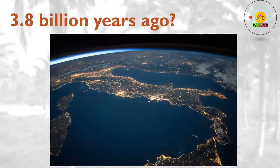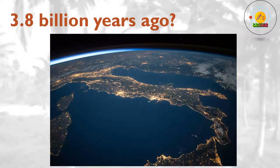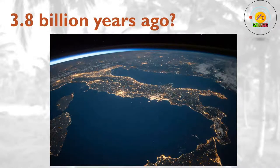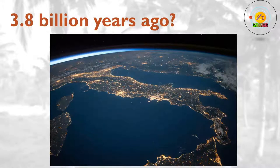3.8 billion years ago? This is our current best guess for the beginning of life on Earth. It is distinctly possible that this date will change as more evidence comes to light. The first life may have developed in undersea alkaline vents, and was probably based on RNA rather than DNA. At some point far back in time, a common ancestor gave rise to two main groups of life: bacteria and archaea.